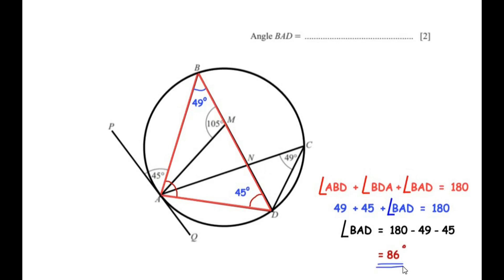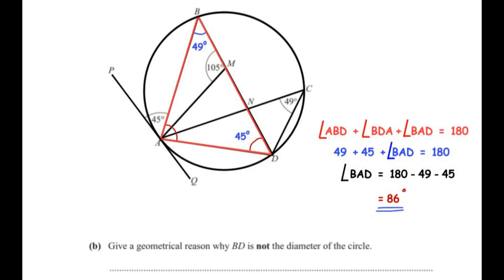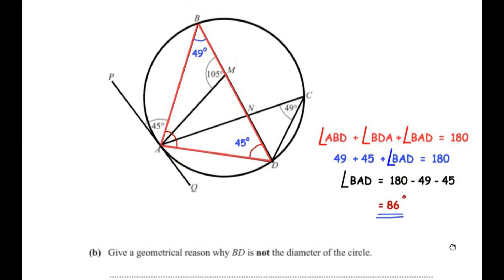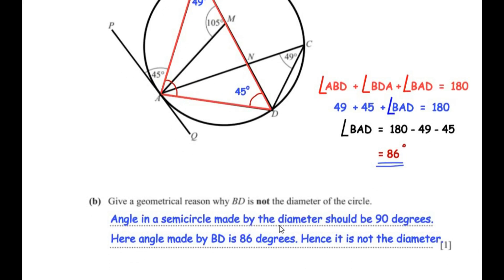For the next sub-question: give a geometrical reason why BD is not the diameter. If BD were the diameter, by the angle in a semicircle theorem, the angle made at the circumference should be 90 degrees. But angle BAD is 86 degrees, not 90 degrees. Hence BD is not the diameter.